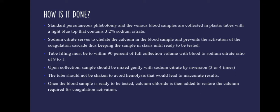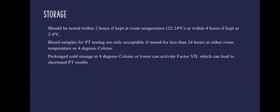Once the blood sample is ready to be tested, calcium chloride is then added to restore the calcium required for coagulation activation. The samples collected should be tested within 2 hours if kept at room temperature, or within 4 hours if kept at a cold temperature, i.e. 2–4 degrees Celsius. Blood samples for Prothrombin Time testing are acceptable only if stored for less than 24 hours, either at room temperature or at 4 degrees Celsius. Prolonged cold storage at 4 degrees Celsius or lower can activate factor 7, leading to shortened Prothrombin Time results.